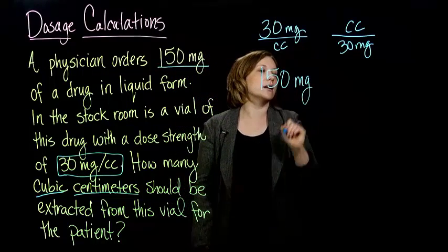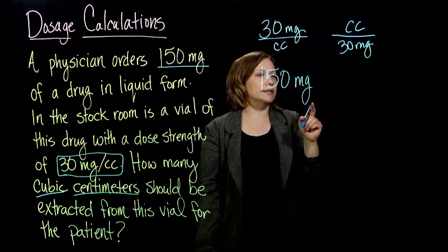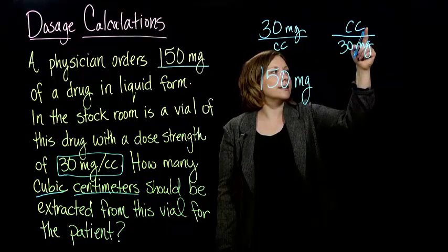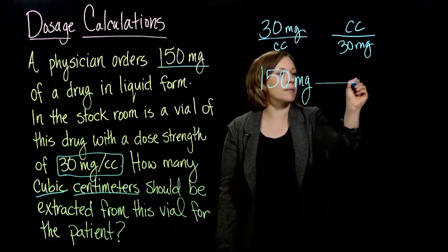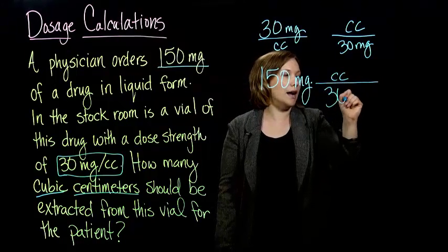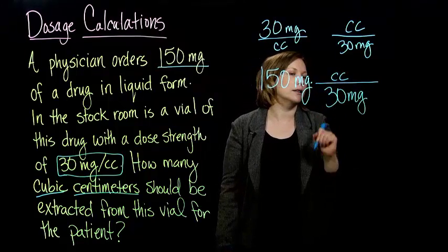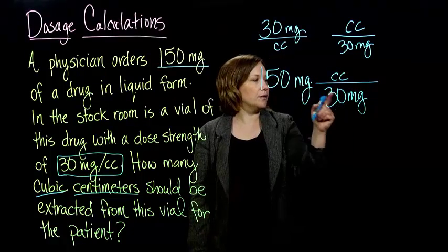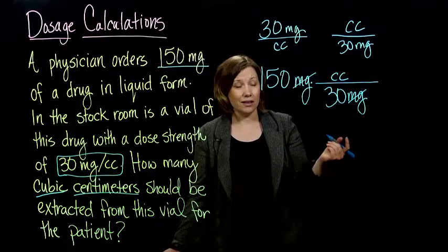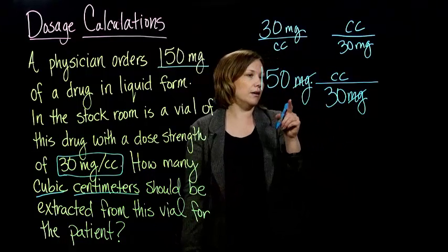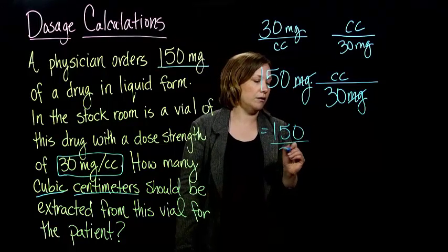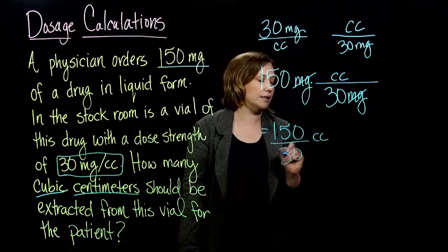I've got cc's with the milligrams on the bottom, and that's the one I'm going to multiply by. Can you see why I'm going to multiply by that? If I put the milligrams on the bottom, what happens to them? They cancel out. So I end up with 150 divided by 30, and my cc's are what's left.